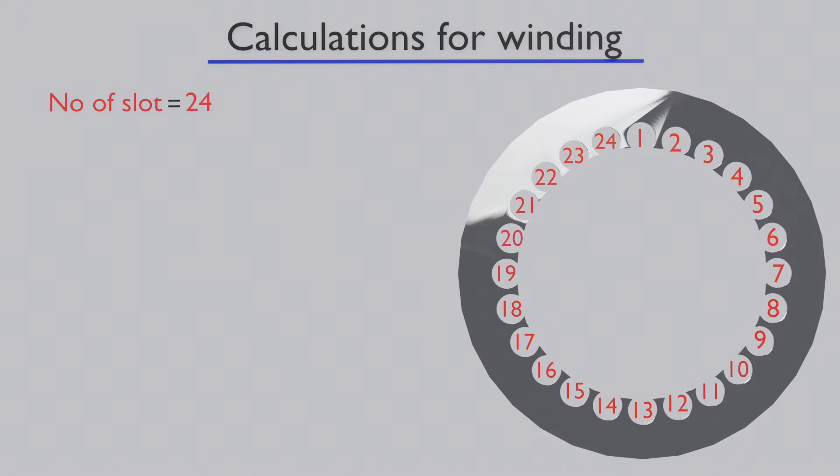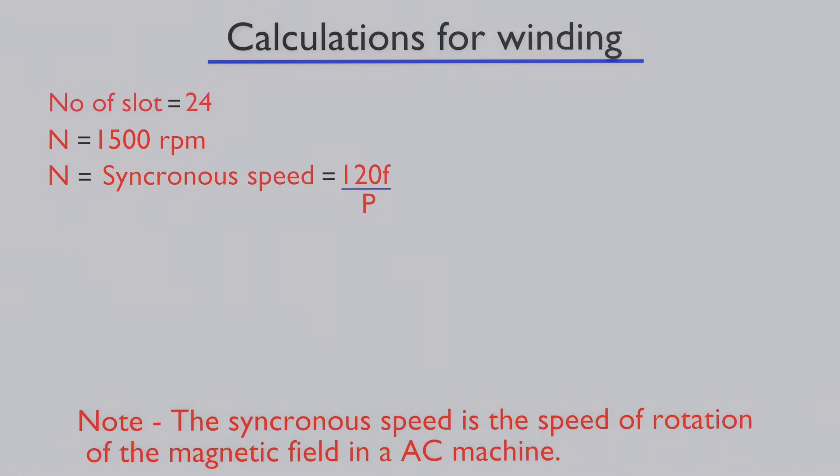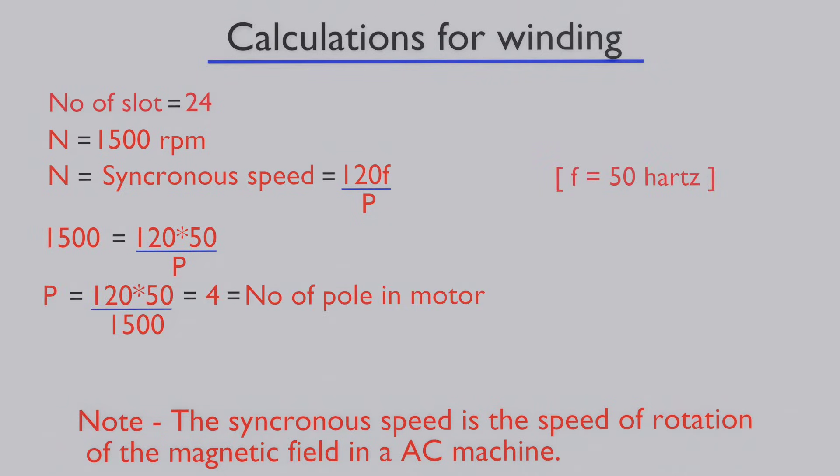We consider our motor speed is 1500 RPM. We put this motor speed in the synchronous speed formula. The number of poles in this motor is four, if frequency is 50 hertz.